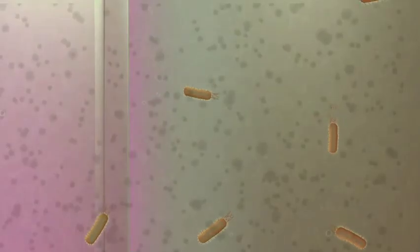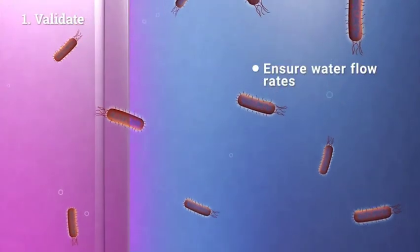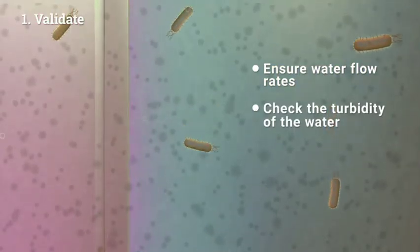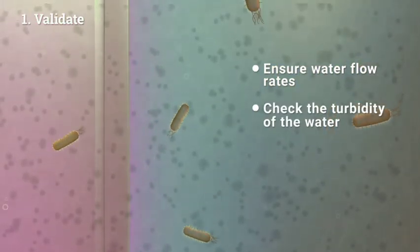If water is too dirty or turbid, the UV light won't be able to pass through to work properly. Check water flow rates so that water is not moving too fast, and also check the cloudiness or turbidity of the water to ensure the UV light works effectively.